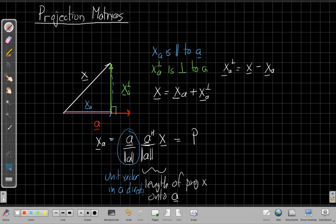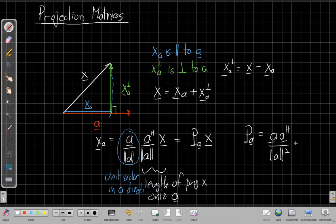And we do this often enough that we'll call this capital P sub a of some vector a of x. So in general, P sub a, capital P sub a, is the projection matrix, is a, a Hermitian over the magnitude of a squared. I've got two magnitudes of a's in the denominator.